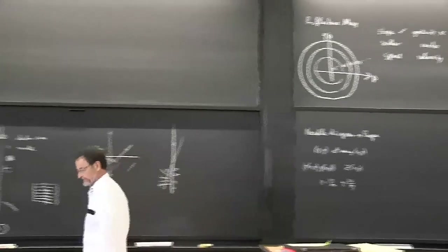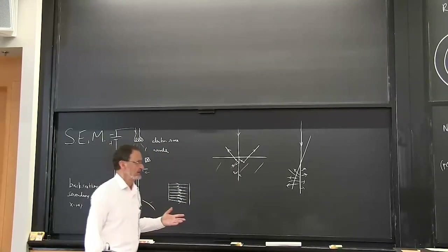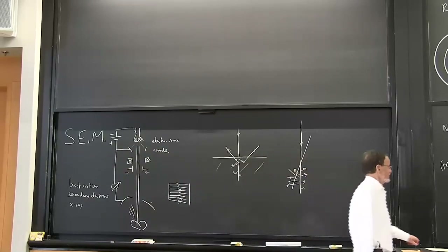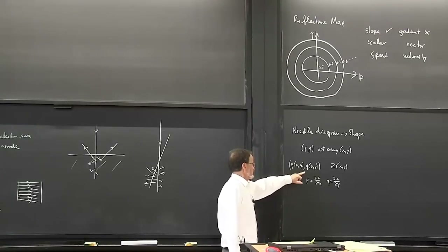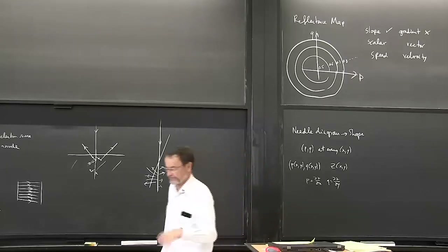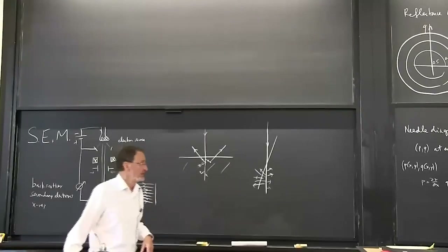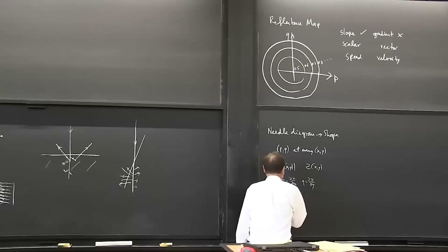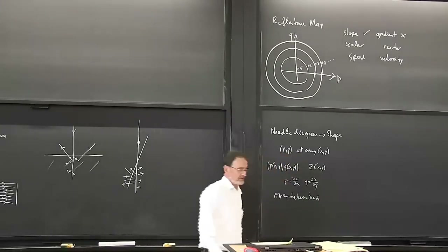In the discrete case, we have a number of unknowns equal to the number of pixels - we're trying to recover Z at every pixel, so there are millions of unknowns. But at every pixel, we also have two pieces of information: P and Q. So if we have a million-pixel image, we have two million pieces of information - it's over-determined. We actually have more information than we need, which is always handy because it means we'll be able to reduce noise and get a better result.